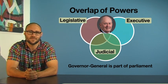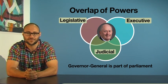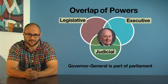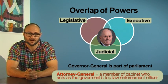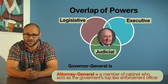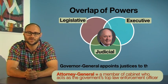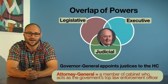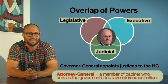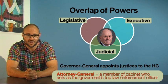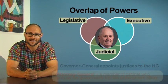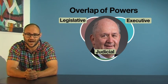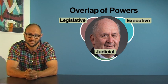Secondly, there is overlap with the judiciary. The Governor-General, acting on advice of the Attorney-General, appoints Justices of the High Court, so they decide who has the power to apply the law. That means that the Governor-General and the Attorney-General have power in all three arms within the separation of powers.